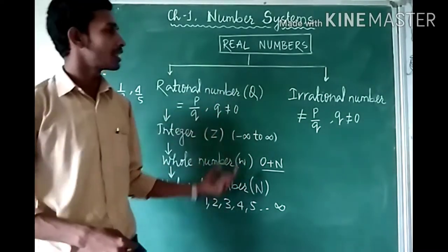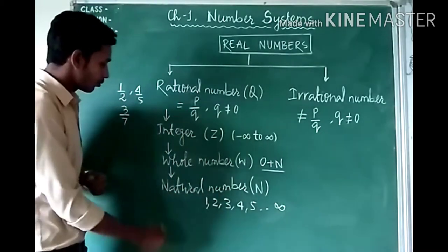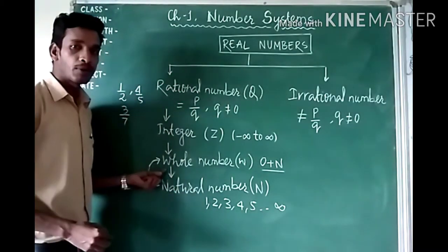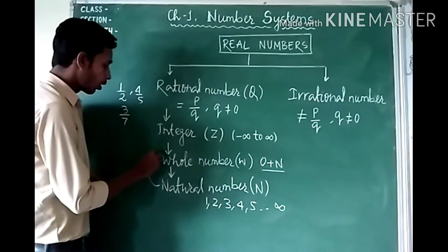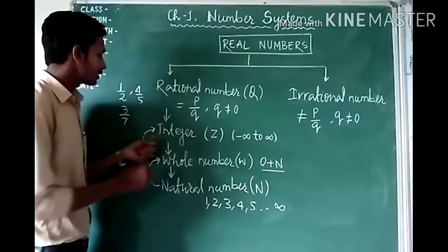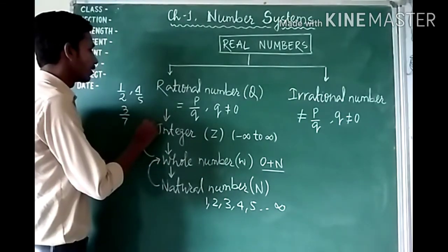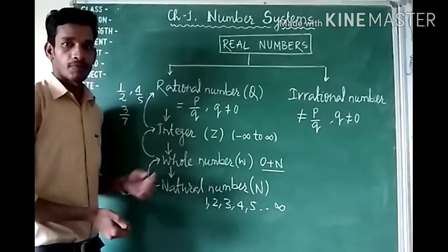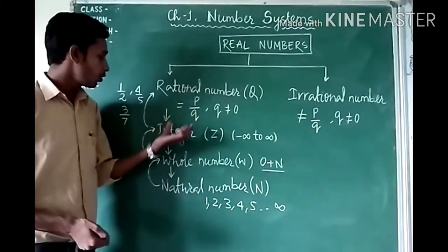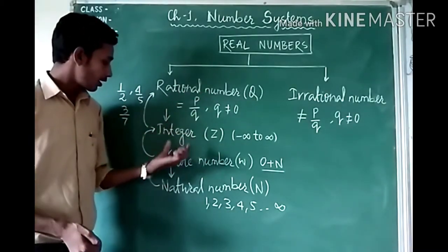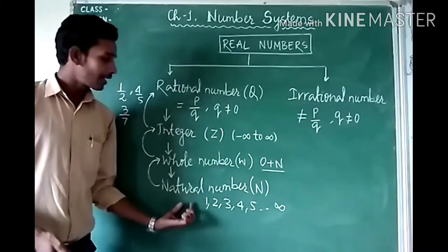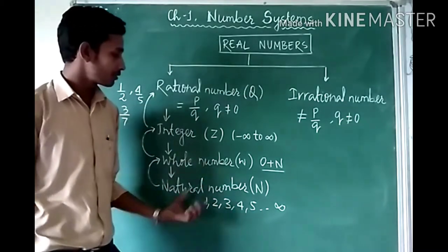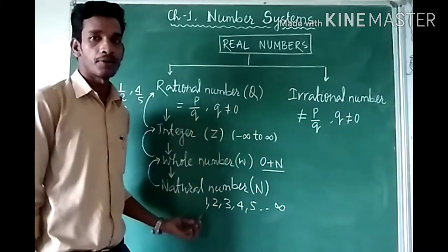This is what we studied in our previous classes. From here we can conclude: all natural numbers can be whole numbers, all whole numbers can be integers, and all integers can be rational numbers. So rational numbers can contain integers, whole numbers, and natural numbers.